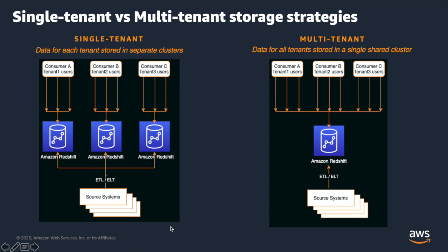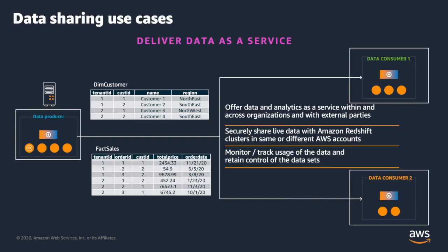Single tenancy means each cluster holds data for a single tenant or consumer with no sharing of resources, whereas multi-tenancy means a single instance of software and its supporting infrastructure is shared to serve multiple tenants. With a multi-tenant architecture you can build a cost-efficient solution by centralizing storage and simplifying ETL processes. However, you have to constantly balance between cost and providing a better user experience. With data sharing, Amazon Redshift provides the flexibility to store data in a multi-tenant model in a single producer cluster while provisioning additional consumer clusters as required, meeting performance requirements and optimizing cost.